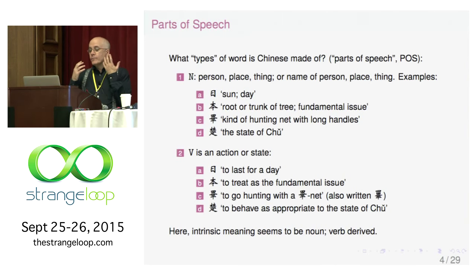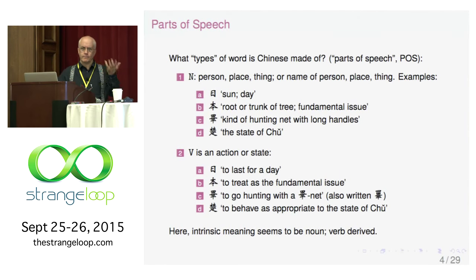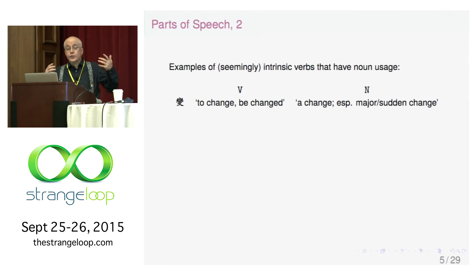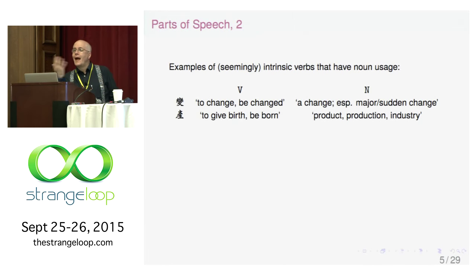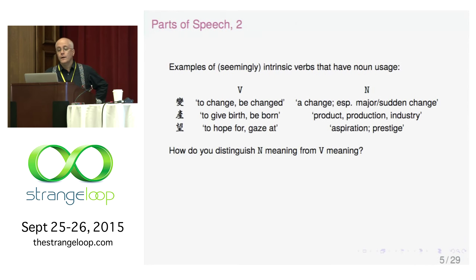These are all words that intrinsically seem to be nouns, but the verb must be derived from the noun — the noun is being used as a verb. The other thing happens too: you can get what seems to be a verb intrinsically, and you find it has noun usage too. Bian, to change — as a noun, a change, a sudden change, a political upheaval. Chan, to give birth or be born — as a noun, product, production, industry. To hope for or gaze at — as a noun, aspiration or prestige, how you are gazed at by those below.